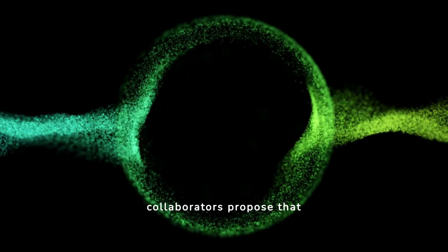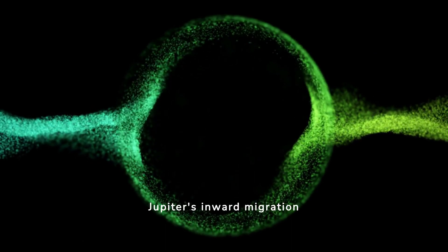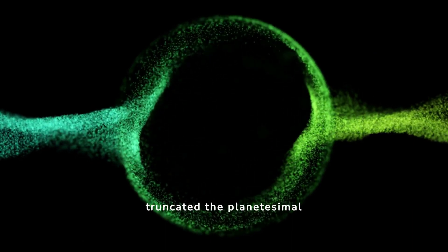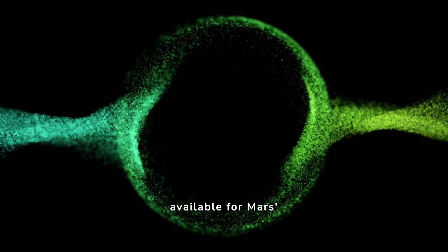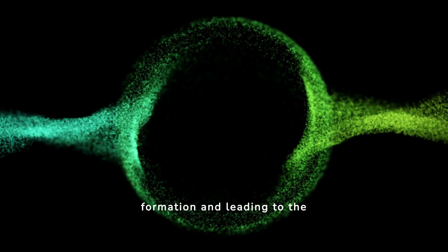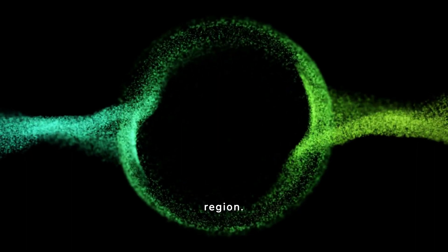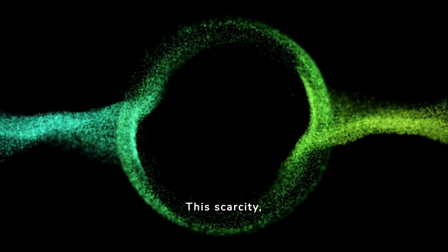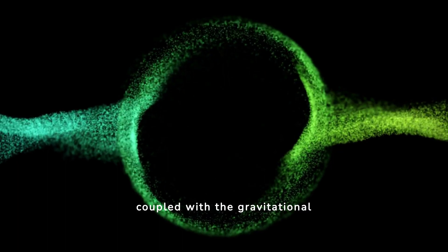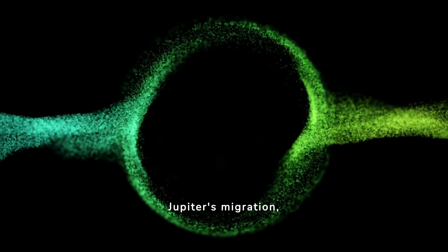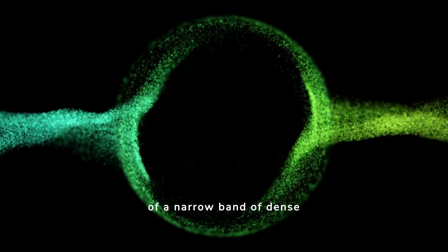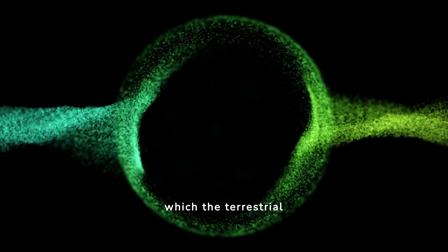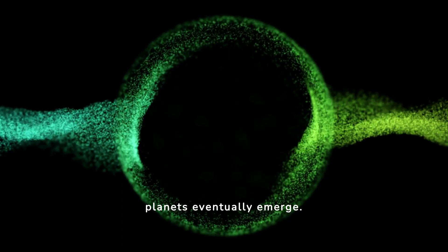Walsh and his collaborators proposed that Jupiter's inward migration truncated the planetesimal disk at 1.0 AU, limiting the material available for Mars' formation and leading to the scarcity of resources in its region. This scarcity, coupled with the gravitational perturbations induced by Jupiter's migration, culminates in the formation of a narrow band of dense planetesimals from which the terrestrial planets eventually emerge.